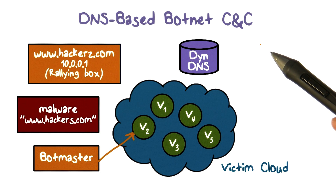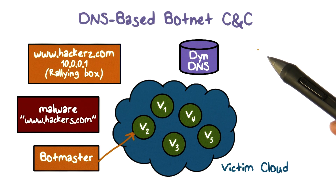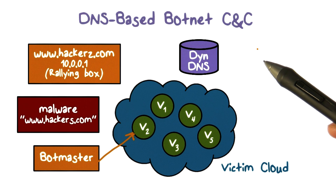Many botnets use DNS for C&C. A key advantage is that DNS is used whenever a machine on the internet needs to talk to another machine, because DNS stores the mapping between domain name and IP address. DNS is always allowed in a network, and therefore using DNS for C&C won't stand out easily.